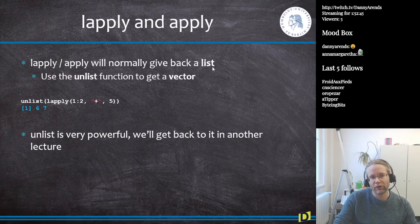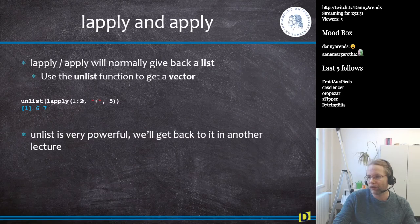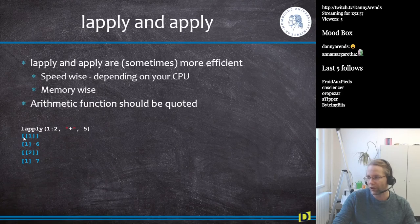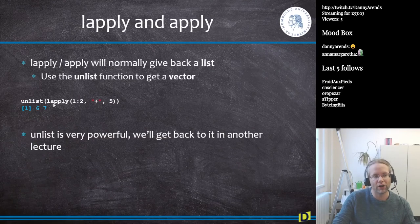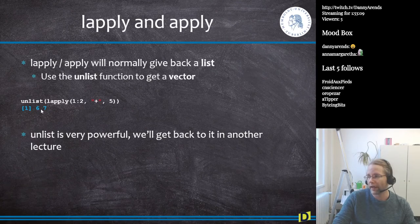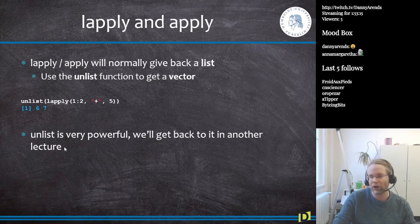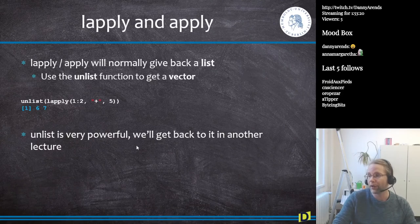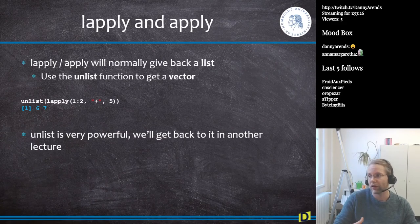Lapply and apply normally return a list. You can use the `unlist` function to convert the result back into a vector, which is generally what you want when you started with a vector.